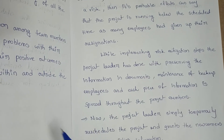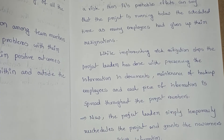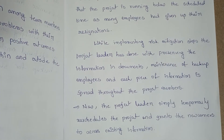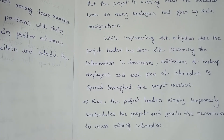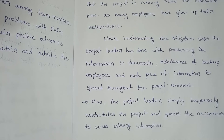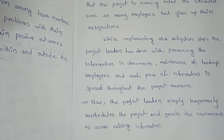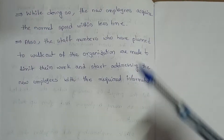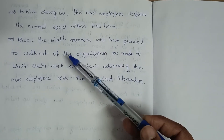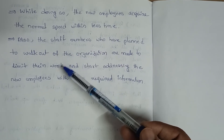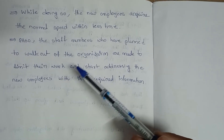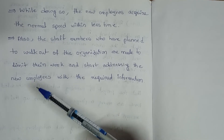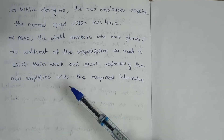Now the project leader simply temporarily reschedules the project and grants the newcomers access to existing information. In simple terms, if the project leader maintained proper risk mitigation steps at an early stage, the project can continue smoothly. The new employees acquire the normal speed within less time, and the staff members who planned to leave the organization are made to limit their work and start addressing the new employees with the required information.